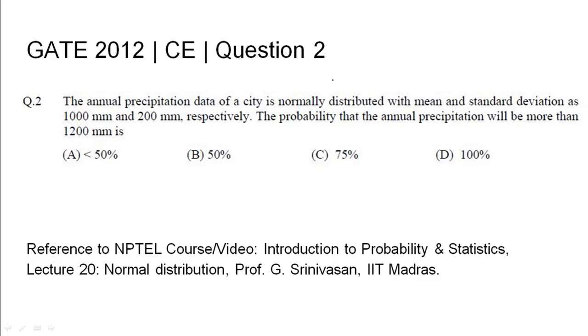GATE 2012 civil engineering question 2. The annual precipitation data of a city is normally distributed with mean and standard deviation as 1000 millimeter and 200 millimeter respectively. The probability that the annual precipitation will be more than 1200 mm is: the four options given are A less than 50%, B 50%, C 75%, and D 100%.